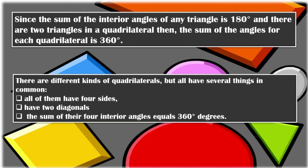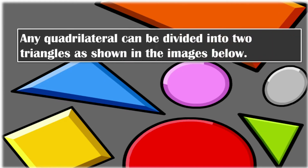Quadrilaterals also have two diagonals. For example, in this box, we have one diagonal and another — that is a pair of diagonals. Any quadrilateral can be divided into two triangles, as shown in the image.